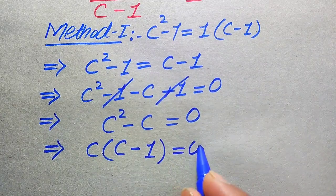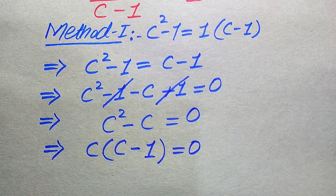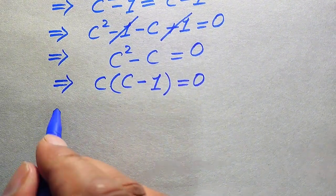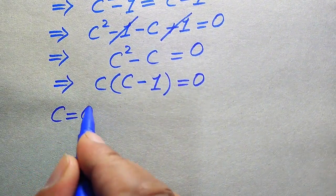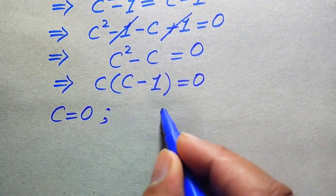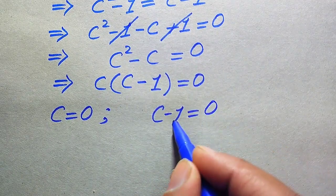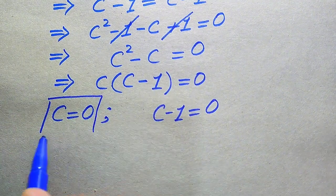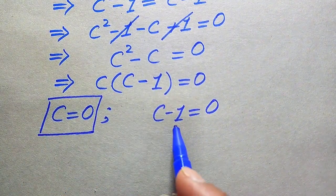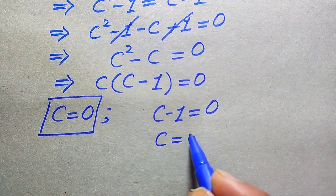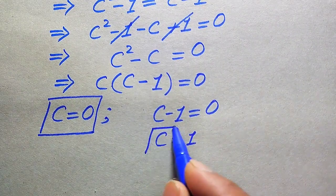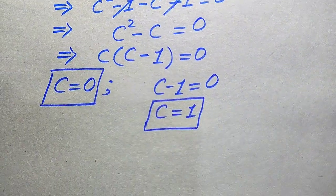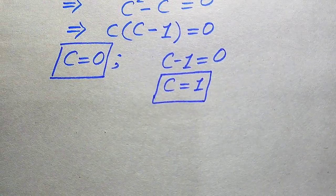We now split into two cases. Case 1: c = 0 — this is our first root. Case 2: c - 1 = 0, so moving -1 to the right-hand side gives c = 1 — this is our second root. From Method 1 we obtain two roots: c = 0 and c = 1.